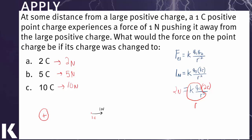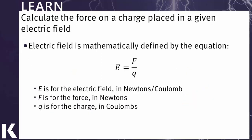And so we can call this the electric field. We can say that this is the force per charge — you tell me what the charge is, and I can tell you what the force will be. We can write this symbolically as: electric force equals the electric field times the charge you put in that field. But this field depends only on the charge that creates it and how far away you are from it. Rewriting, the electric field equals the force divided by q — the force per unit charge. That's why the units are newtons per coulomb.